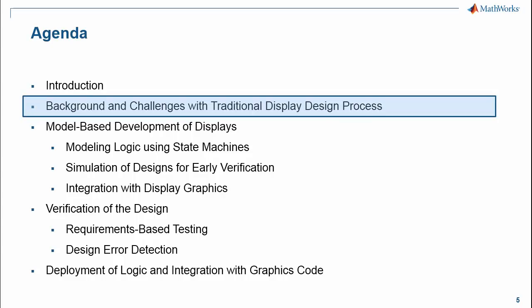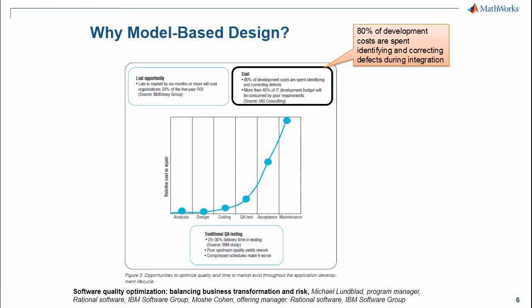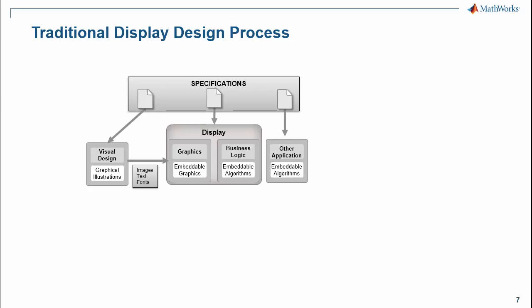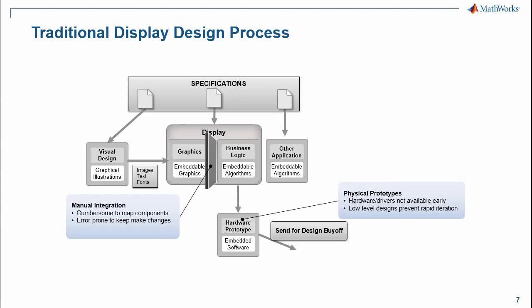The main problem we are trying to solve is the high cost of catching errors late in the design cycle. Research by IBM states that almost 80% of development costs are spent identifying and correcting defects caught during the integration phase. In a traditional development process, paper-based specifications form the basis of software for developing graphics and business logic that drives the UI. It is hard to integrate these components and even harder to keep them in sync as designs get updated. UIs are then visualized by deploying to hardware prototypes which might not be available early in the design cycle, and this dependence on hardware inhibits rapid design iteration.